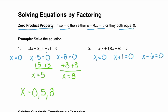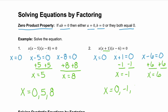Again, our first factor is already solved: x equals zero. Our second factor, if we subtract 1 from both sides, we get x equals negative 1. And if you plug in negative 1, that second factor becomes zero. The third factor, if we add 6 to both sides, we get x equals positive 6. So our possible answers for example two are x equals zero, negative 1, or 6.